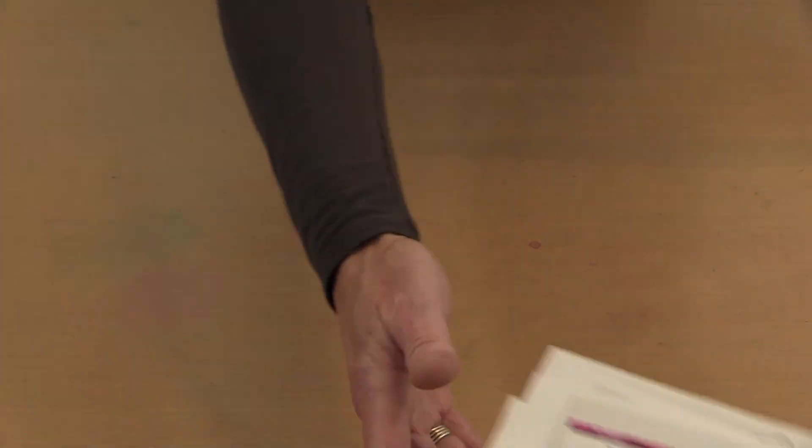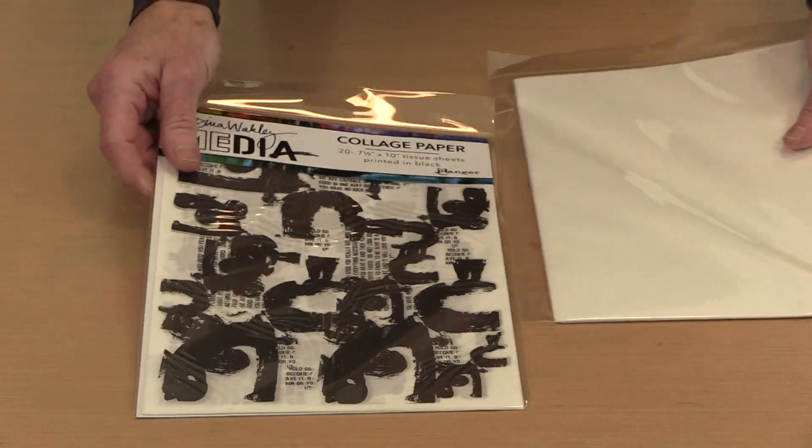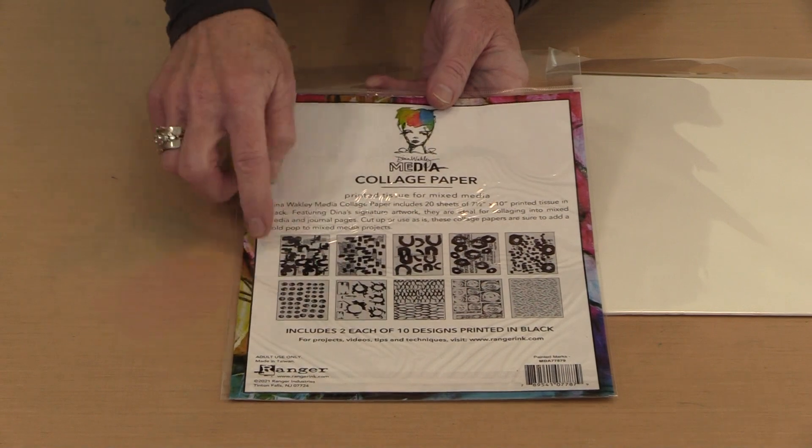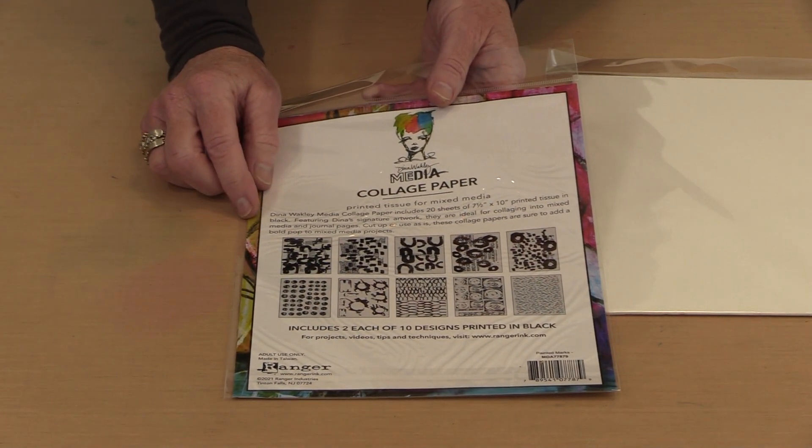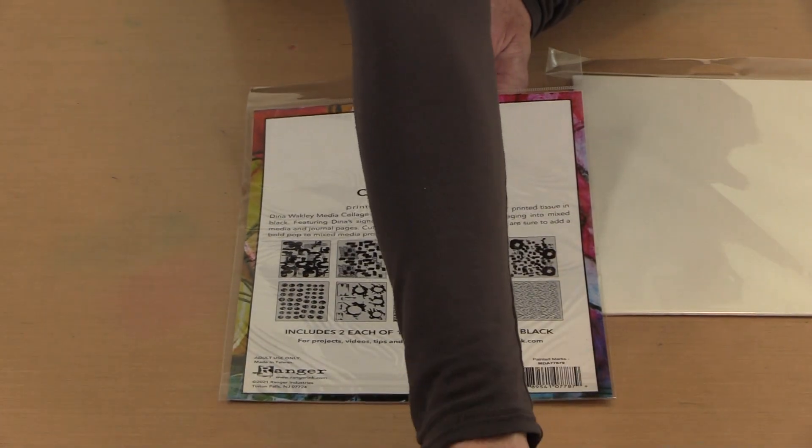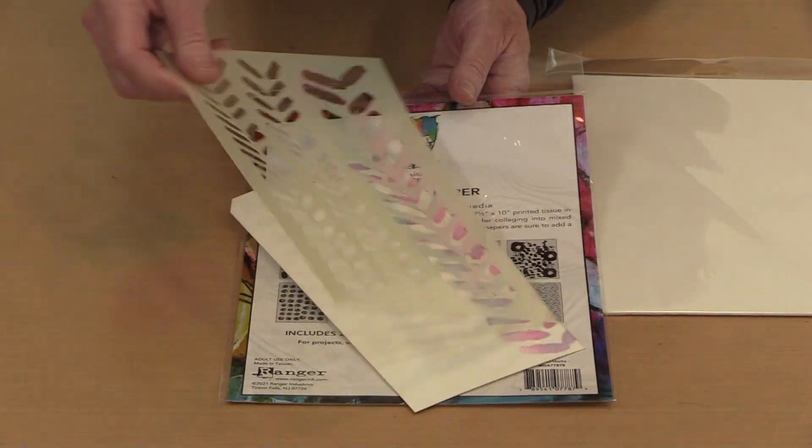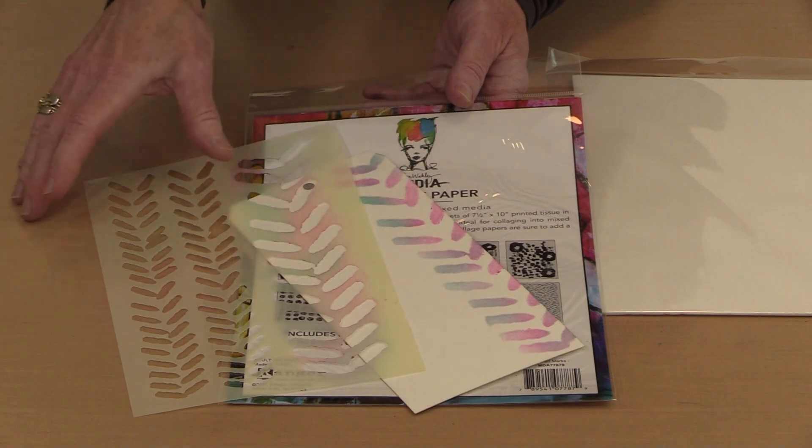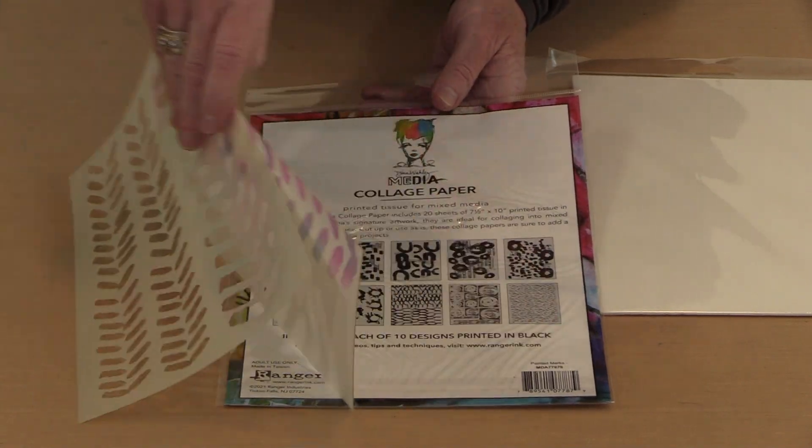So then the last thing for today, also from Dina, are two packages of collage paper. There's this one here, and you can see on the back all of the various designs that are in there. This one is named Painted Marks. And thematically, you see that kind of works with this here, because this is Painted Angled Blobs, I think it's called. So there's kind of a theme going on there.